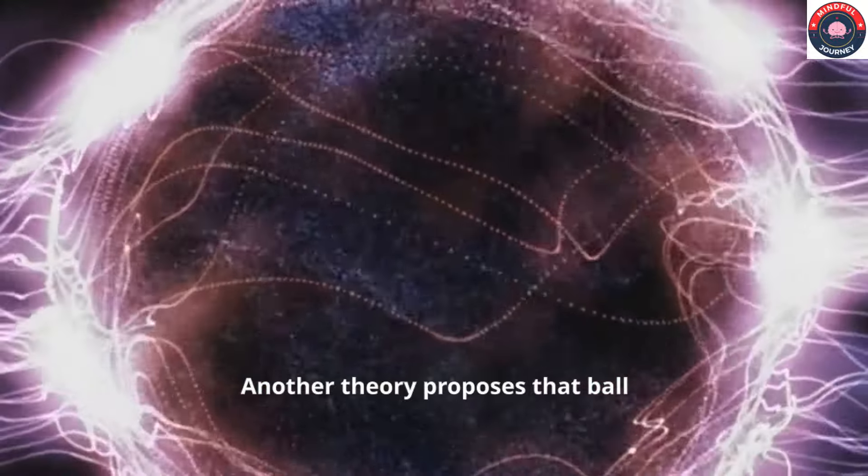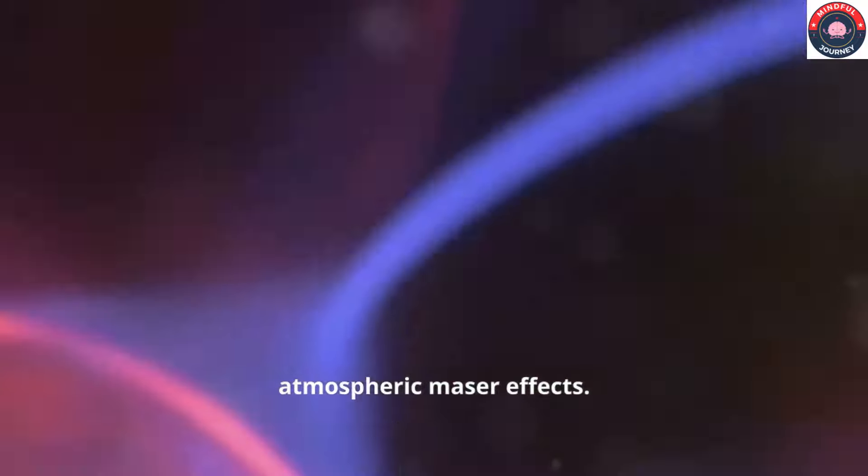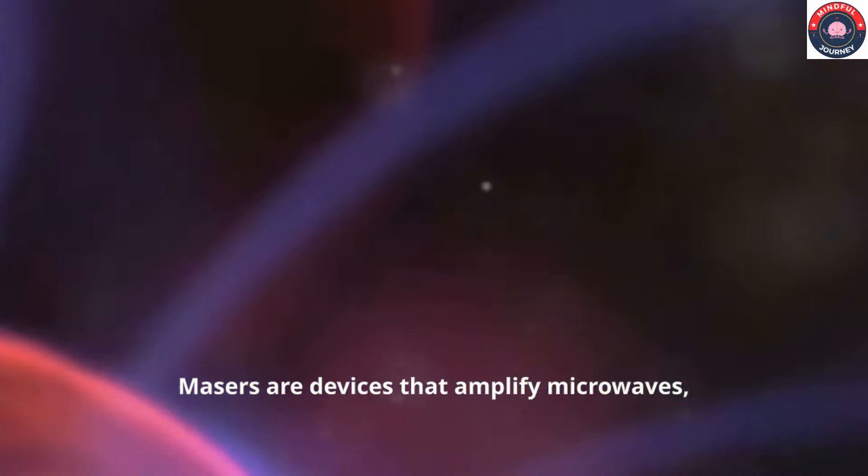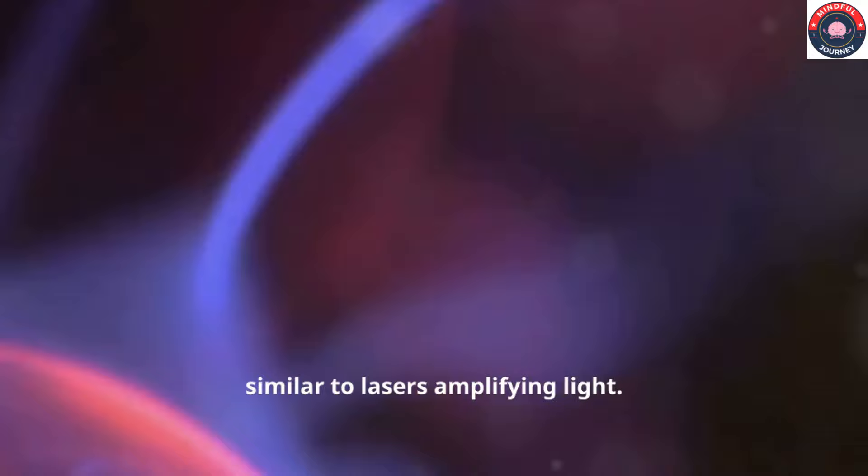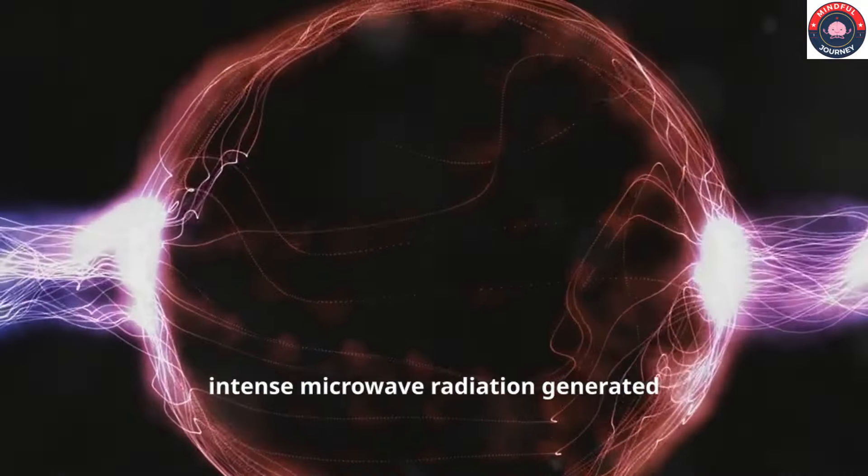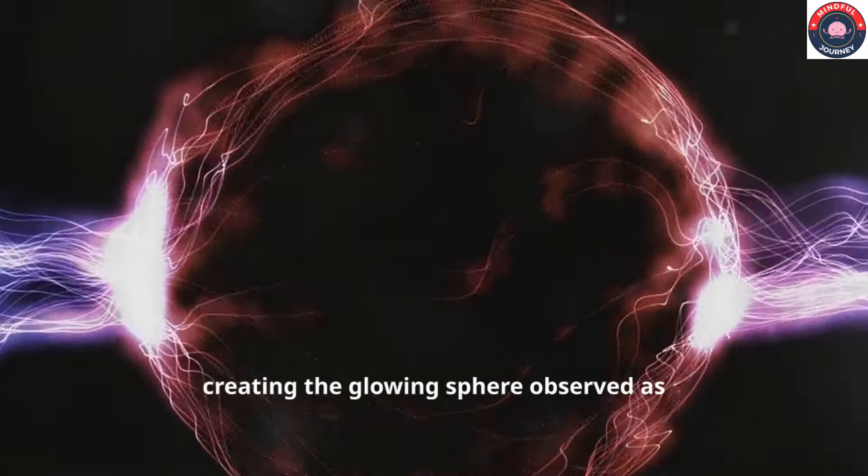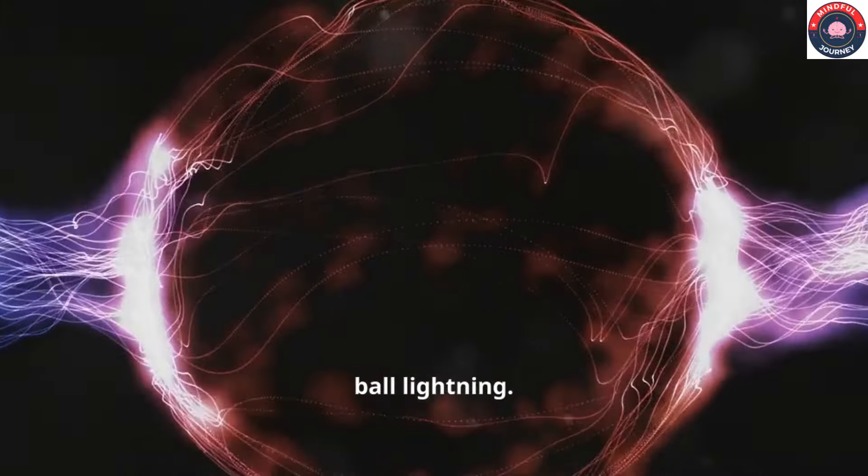Another theory proposes that ball lightning is a manifestation of atmospheric maser effects. Masers are devices that amplify microwaves, similar to lasers amplifying light. According to this theory, intense microwave radiation generated during thunderstorms could become trapped in a plasma bubble, creating the glowing sphere observed as ball lightning.